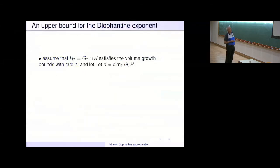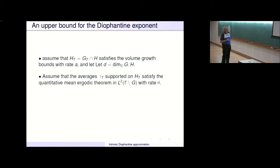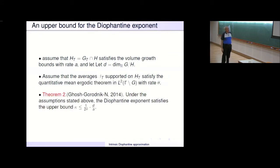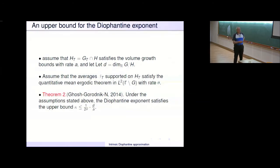Assume that H_T satisfies the volume growth bounds with rate A, and let D equal the dimension of the variety. We assume the averages beta_T supported on H_T satisfy the quantitative mean ergodic theorem with rate theta. Under these assumptions, the Diophantine exponent satisfies the upper bound: the previous a priori lower bound D over A, multiplied by 1 over 2 theta.